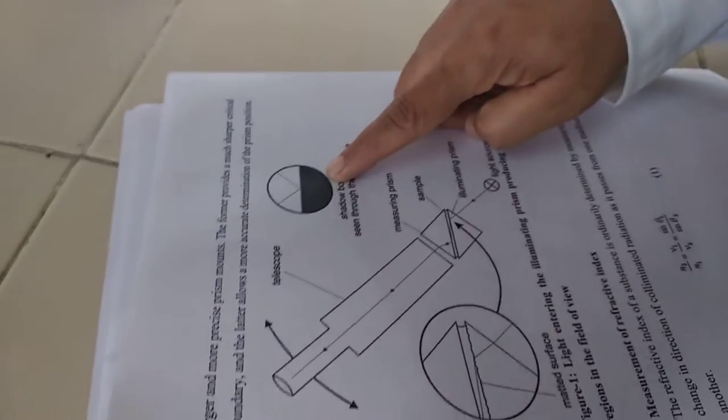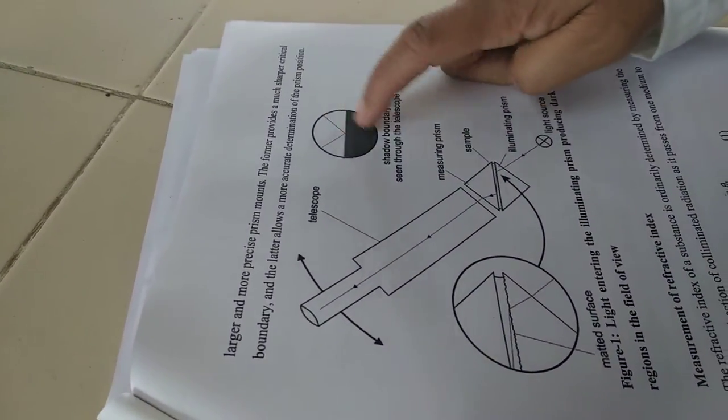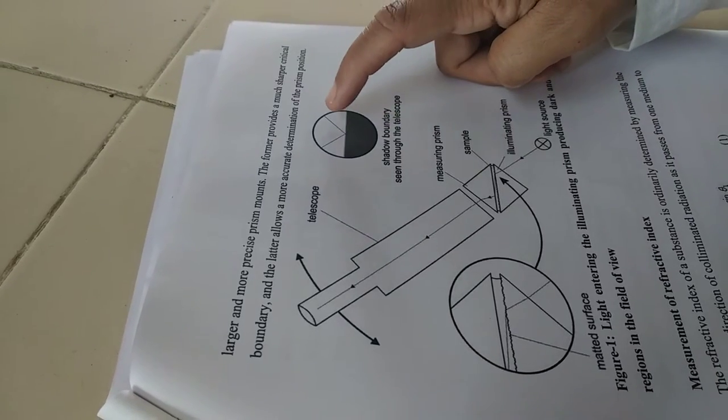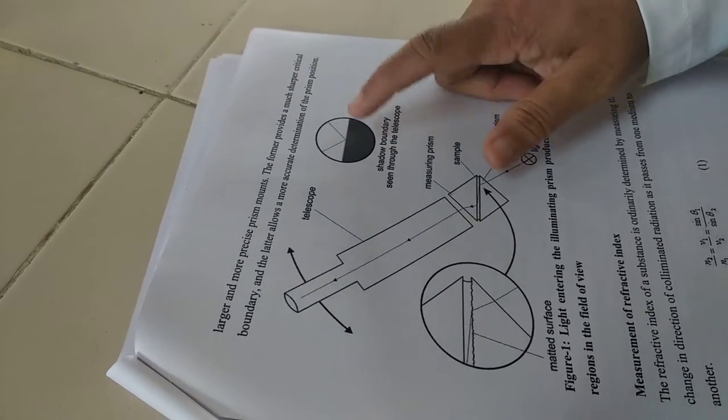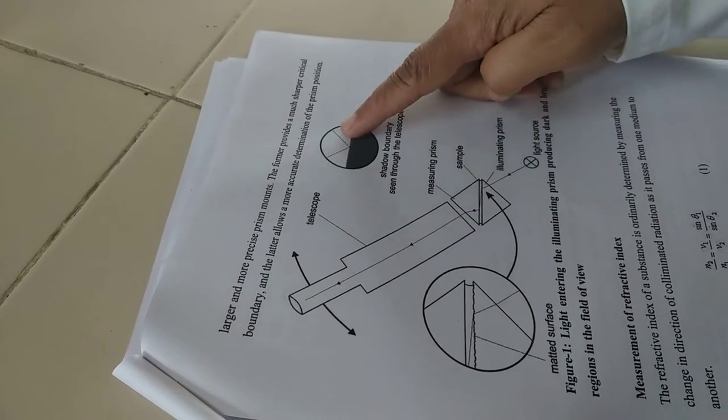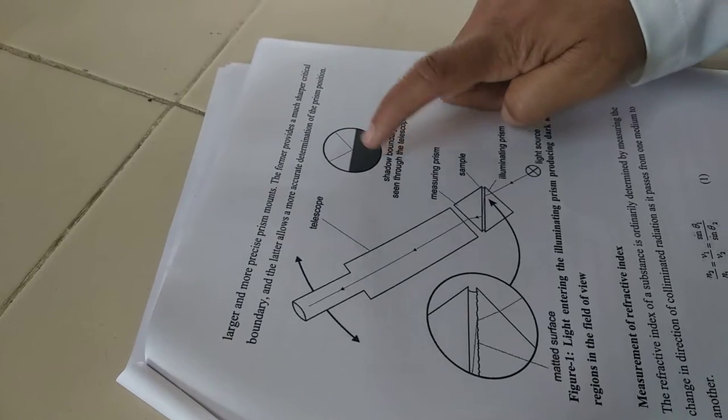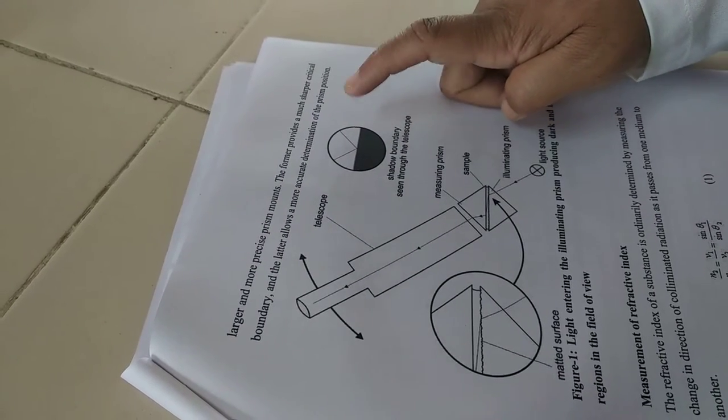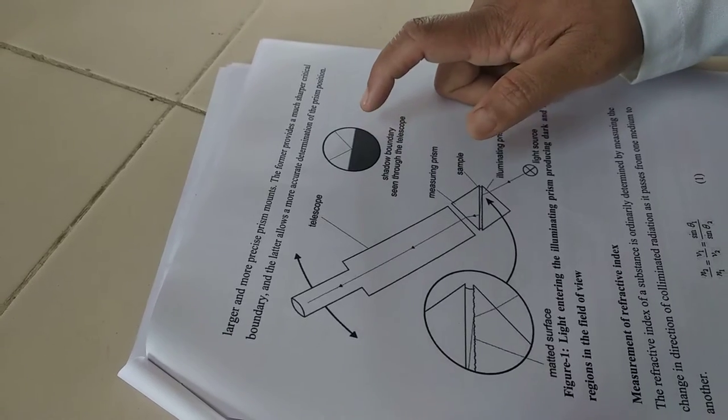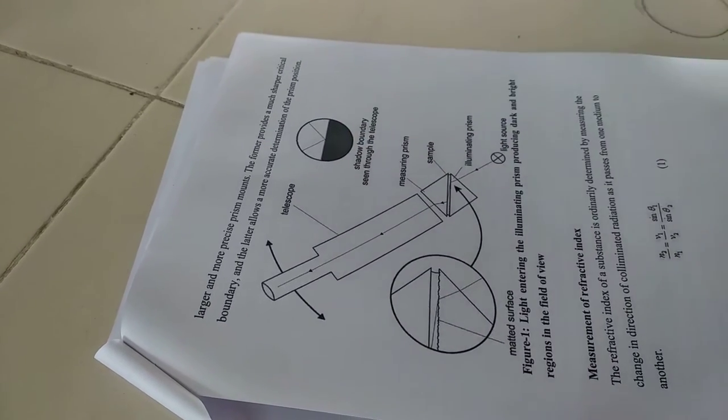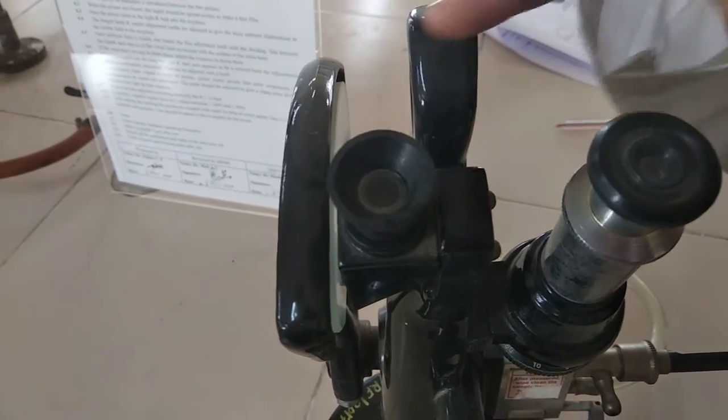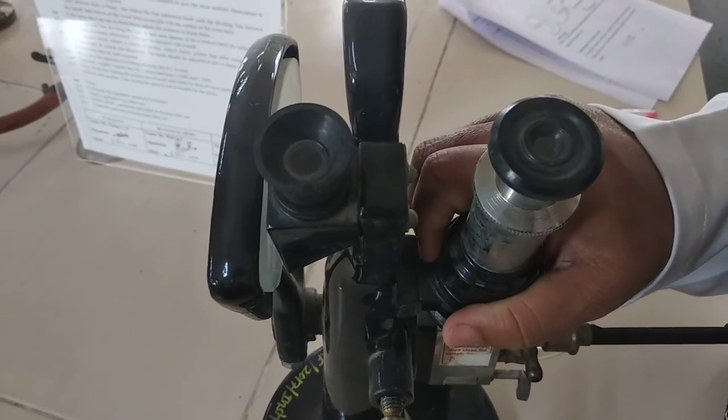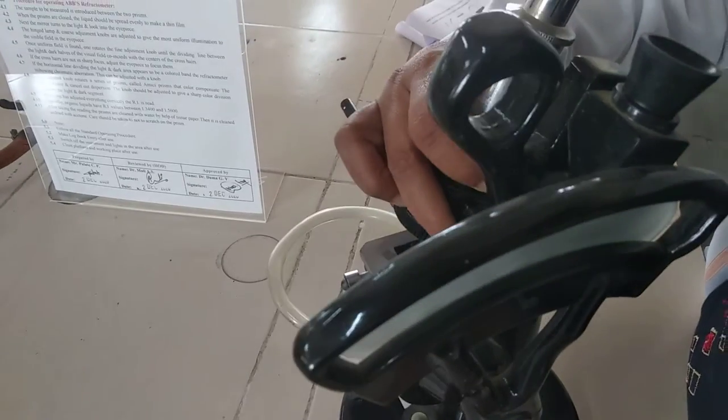Just see, like this picture. Here, one cross line will be there and always this dark portion and light portion, this should be 50-50 percent or half of this circle. We have to adjust our mirror or we have to adjust our sample like this only. And afterwards, we can measure our refractive index by using this instrument.